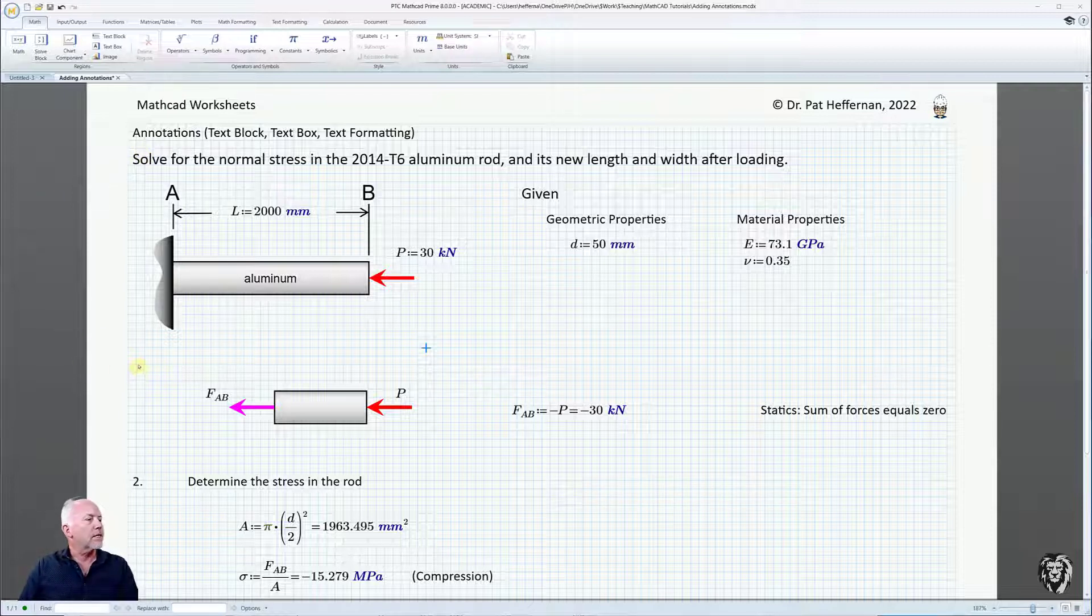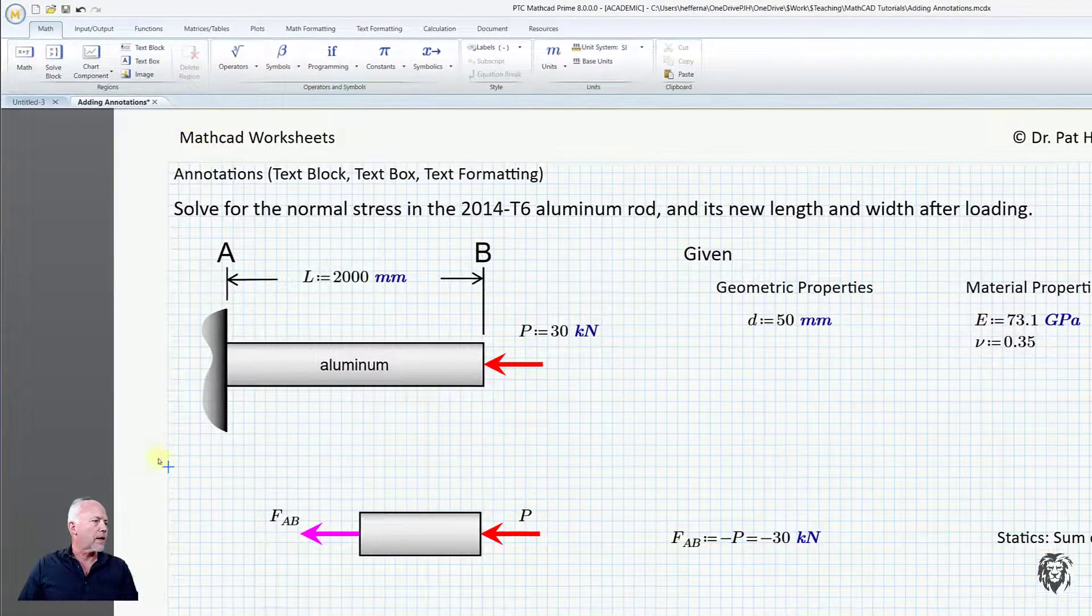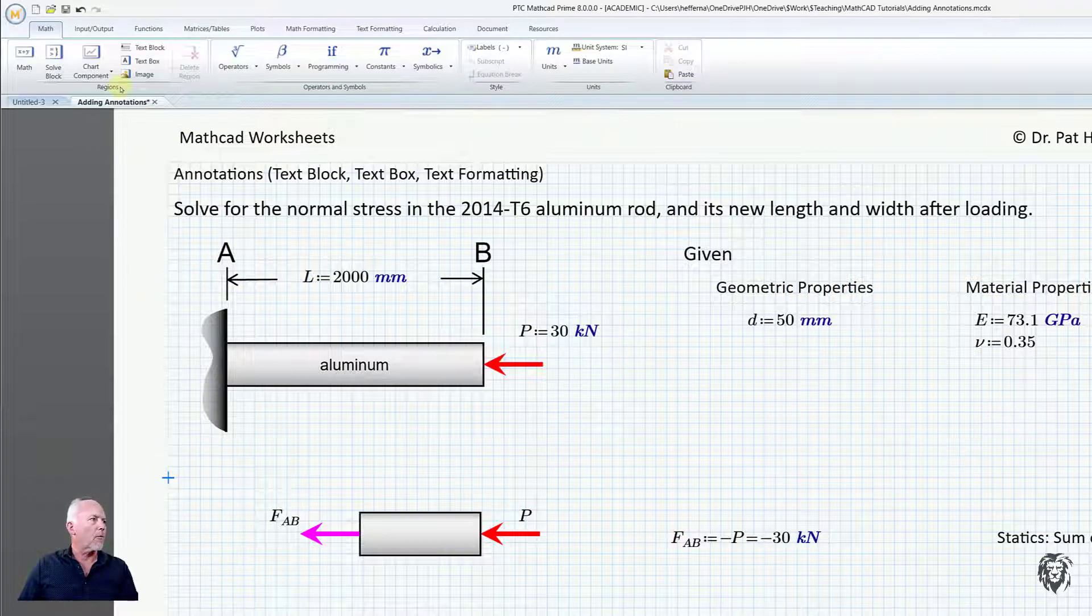So the first one that I'm going to demonstrate is the text block and remember it's going to go full width. So you see I've actually got one down here identifying step two so what I'm going to do is I'm going to put one in for step one and so I place my cursor where I want it.